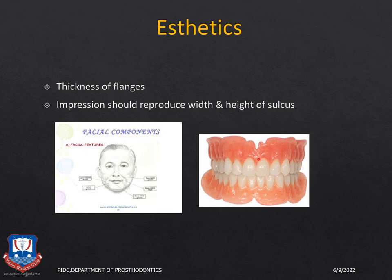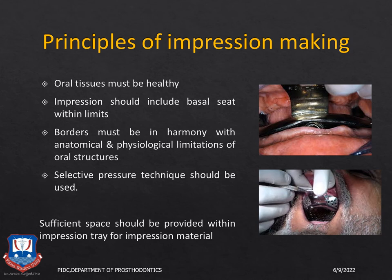The last objective of impression making is aesthetics. The thickness, height, and contour of the flanges should support the patient's oral musculature — providing lip fullness, cheek fullness, reducing the nasolabial fold, and preventing the commissures of the mouth from drooping downward. All this can be accomplished with a good secondary impression, as during final impression making you record not only the vestibular height and extensions but also the width of the denture borders.